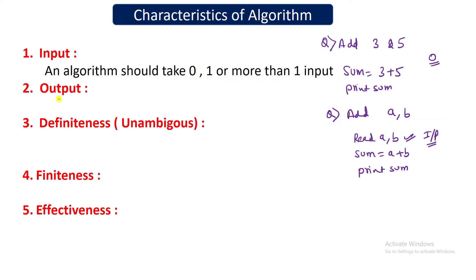The next property is that your algorithm should generate output. If an algorithm is not generating any output then it is of no use, because given a question you should produce an answer. So there should be at least one output from a given algorithm, and there can be many outputs as well.